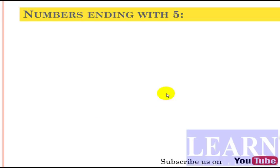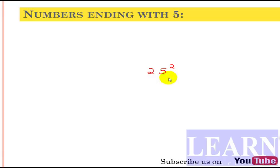Yes, in just two seconds — actually just one second! First we'll take the example of 25 squared. This is a number which ends with five. Here I have written 25 squared. First, split this number into two parts. Since the number ends with five, directly write the last two digits of the square as 25, because five squared is 25.